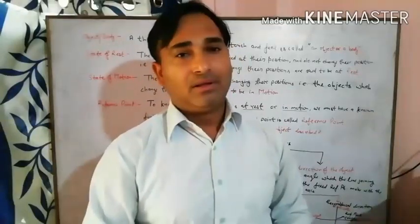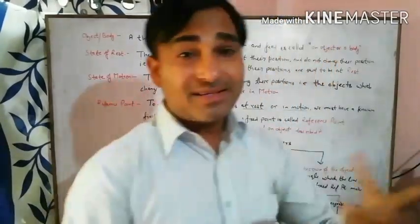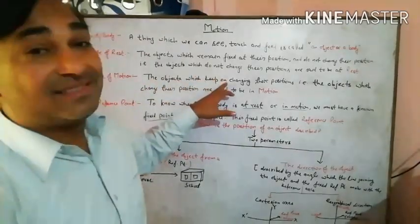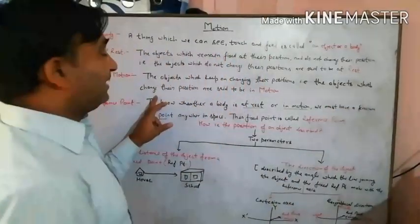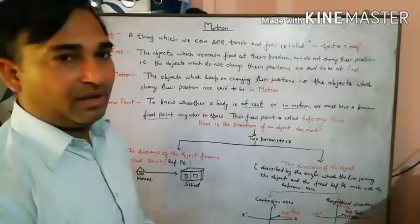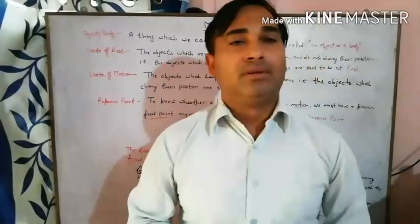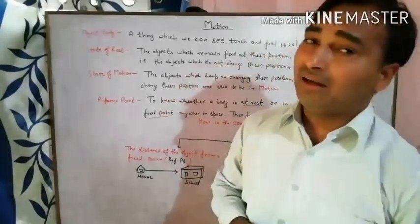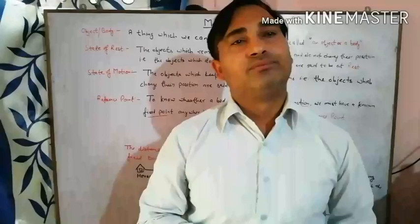State of motion: the objects which keep on changing their position are said to be in motion. All of you understand — when a body is in rest position and when a body is in motion. But the question is: how do you know that a body is in rest position and a body is in motion?